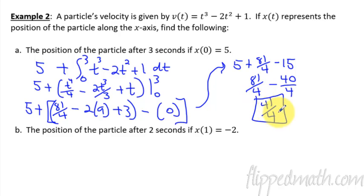So then our final answer is 41 fourths. That is the position of this particle after three seconds. We started at five, and then you add the net change.